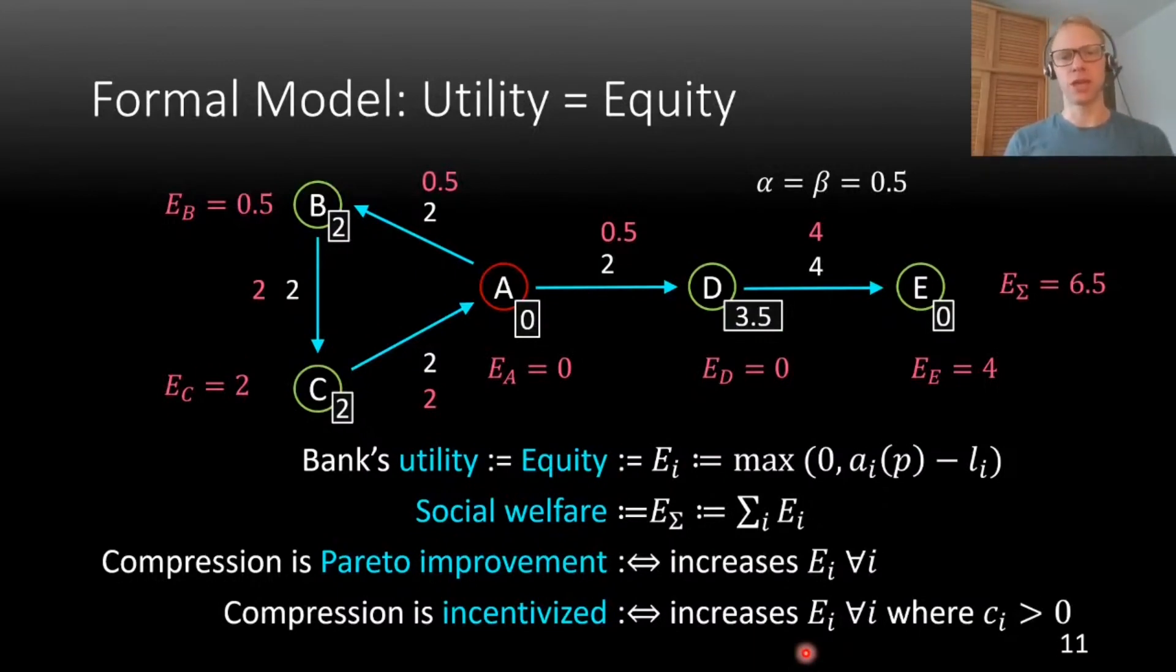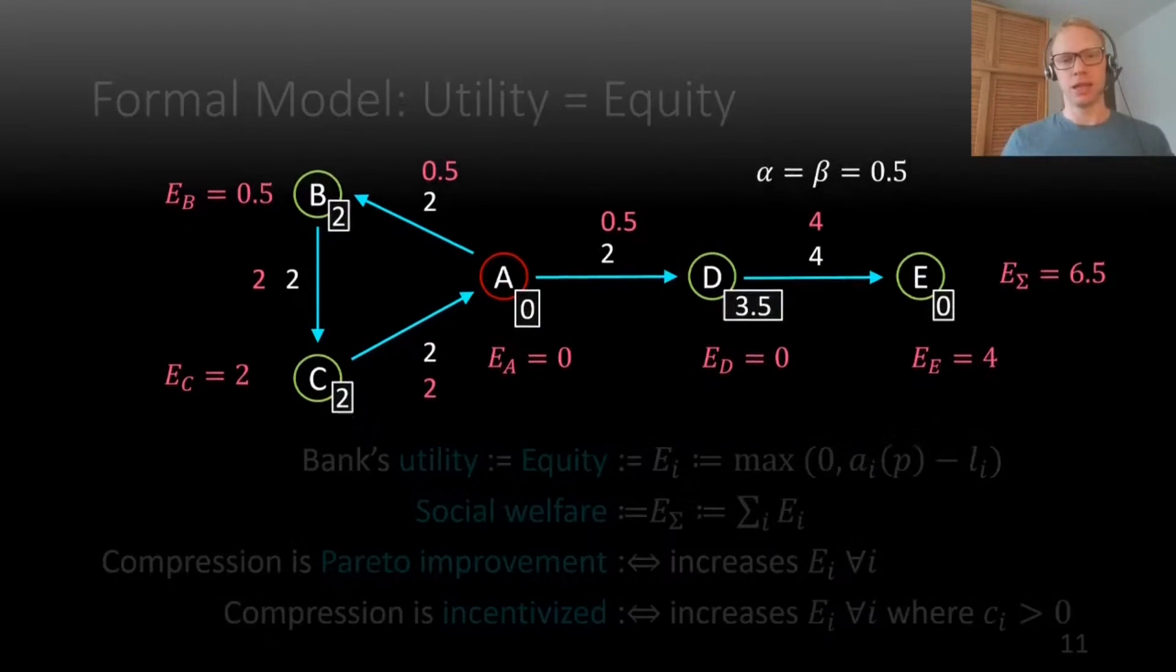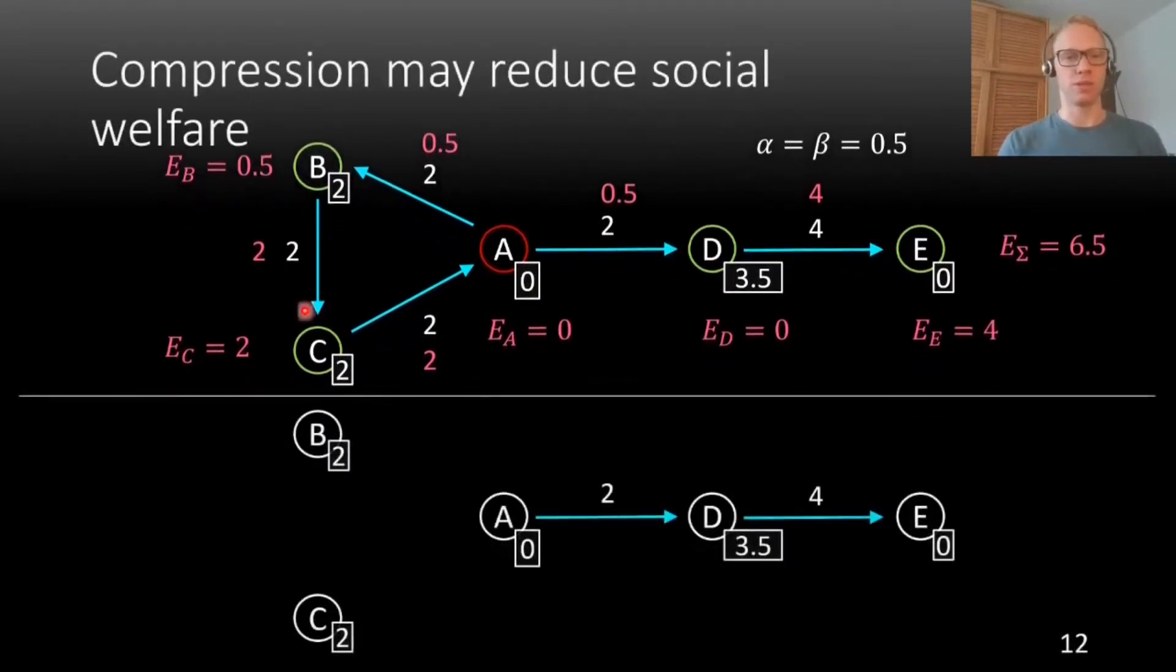Now I am going to show you that compression can reduce social welfare, and it will turn out that actually this example is such an example where this can happen. Let's see what happens when we take this cycle here and we compress it with an amount of 2. So then we receive this financial network that is very simple. These liabilities have all disappeared, and we only have this kind of chain left. Let's compute payments in the compressed network. For bank B, it's again very simple, it's not going to default. The same for bank C, and equity is just equal to external assets because they don't have any contracts.